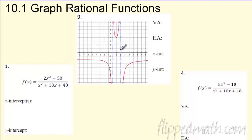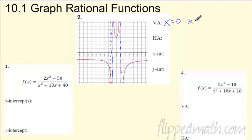Starting with number nine — that's 10.1, graphing. I give you a graph and these dotted lines are the vertical asymptotes. What are the vertical asymptotes? This would be when x equals — you can see it crosses at two and there's another one at zero. Make sure you write these as equations: x equals zero and x equals two. The horizontal asymptote goes horizontally and it's a y equals — in this case y equals negative two.